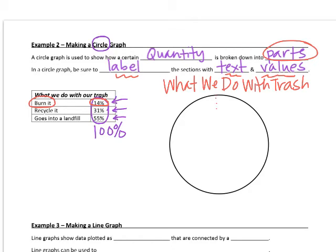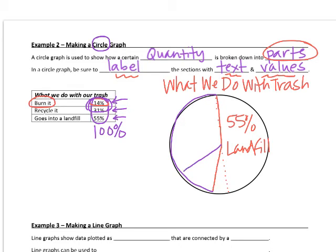So half of this circle, if I went right down the middle, that would be 50%. But I have to do that just slightly more than 50%. So I'm going to say that here, the solid line is my 55% that goes into a landfill. And then the rest of this space over here, the rest of my graph has to be divided into the 14 and 31%. Now 14% is going to be a slim amount, so I'm just going to make that maybe right here.